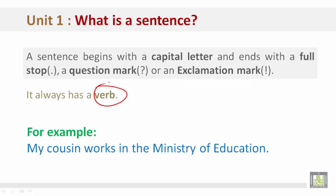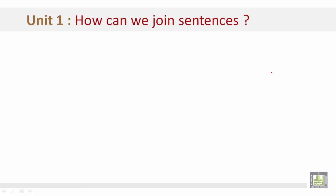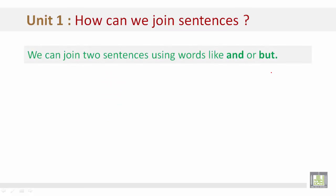Here we have a sentence and it begins with a capital letter. It is ending with a full stop. It could also end with a question mark or exclamation mark depending on how the sentence is written. How can we join sentences? We can join two sentences using words like 'and' or 'but', also known as conjunctions.